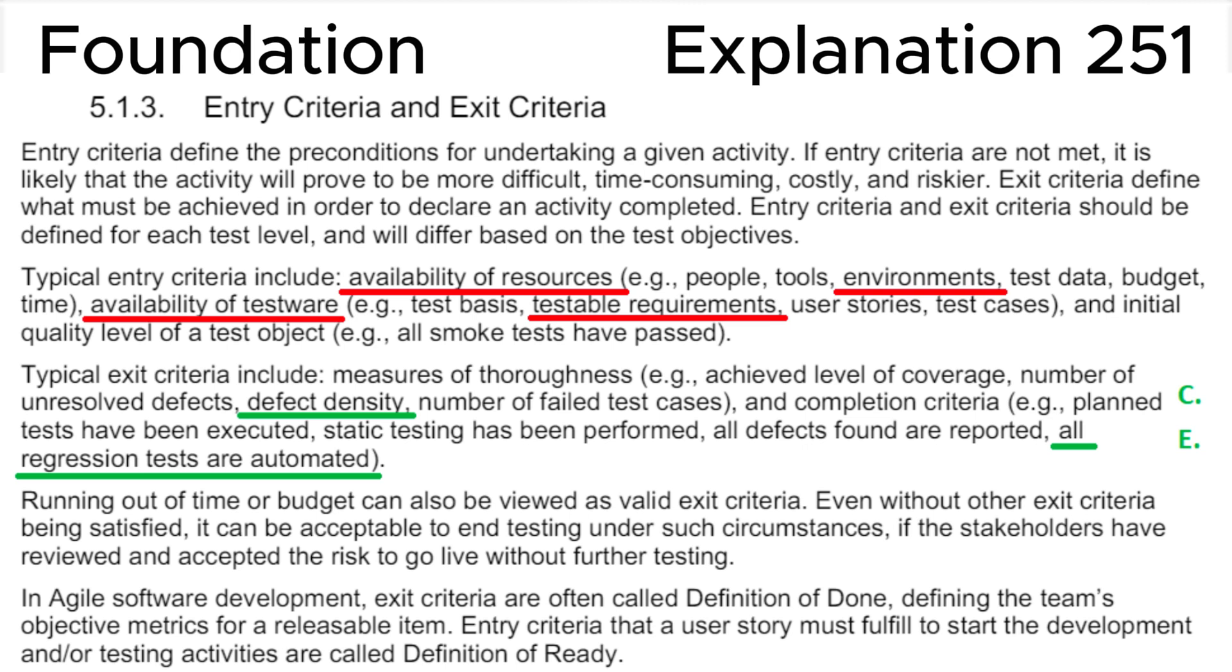For example: people, tools, environments, test data, budget, time; availability of test ware, for example: test basis, testable requirements, user stories, test cases; and initial quality level of a test object, for example: all smoke tests have passed.